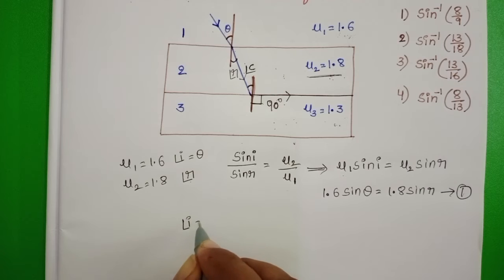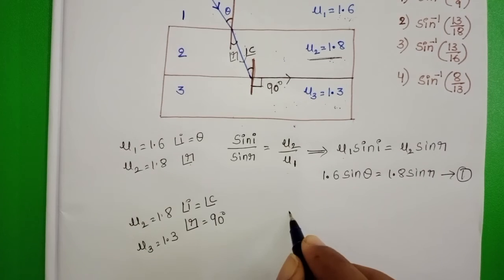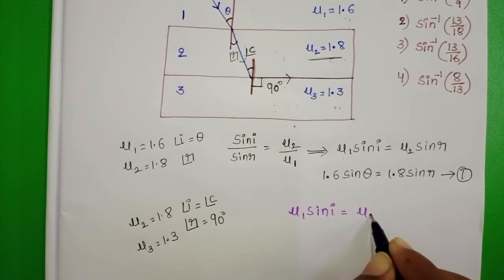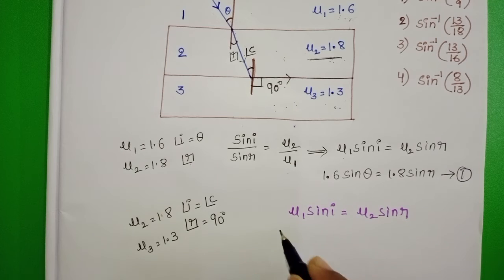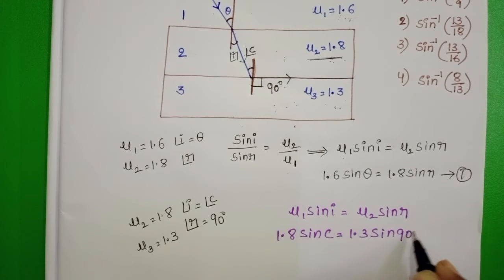Angle of incidence equals critical angle and angle of refraction equals 90 degrees. Refractive index of second medium is 1.8 and third medium refractive index is 1.3. Mu 1 sin i equals mu 2 sin r. In place of mu 1, 1.8 sin c equals 1.3 sin 90 degrees.